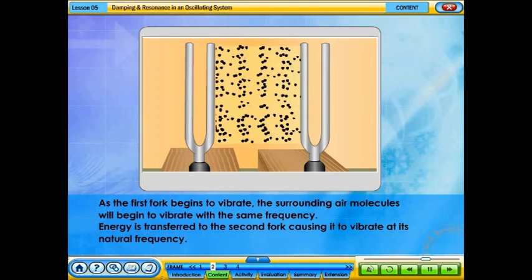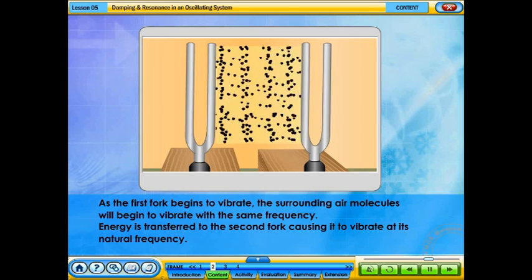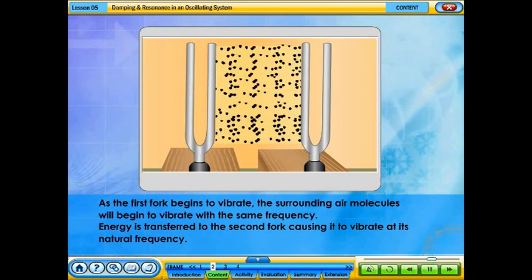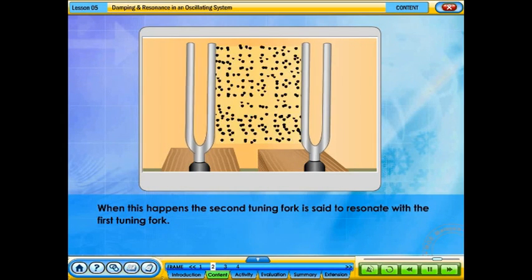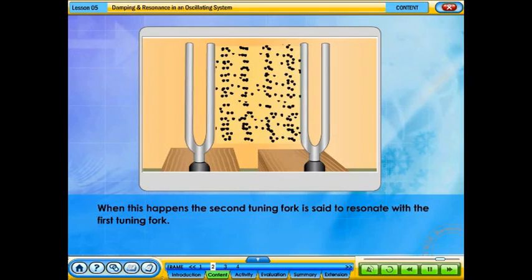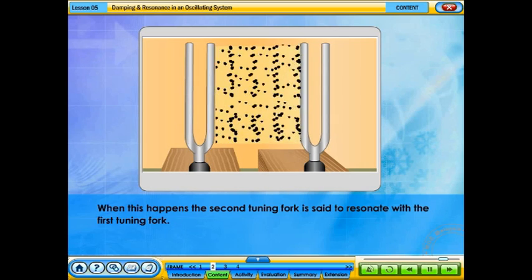As the first fork begins to vibrate, the surrounding air molecules will begin to vibrate with the same frequency. Energy is transferred to the second fork, causing it to vibrate at its natural frequency. When this happens, the second tuning fork is said to resonate with the first tuning fork.